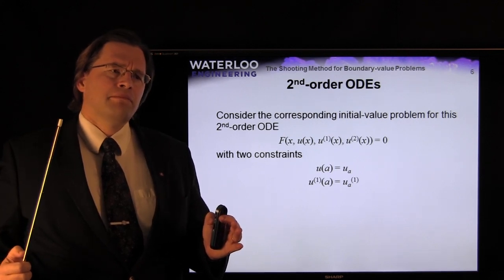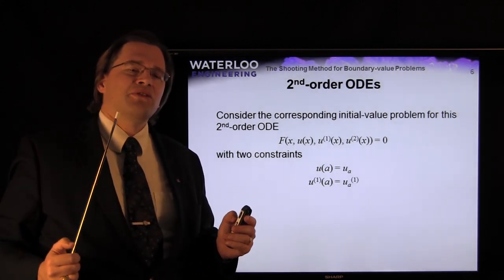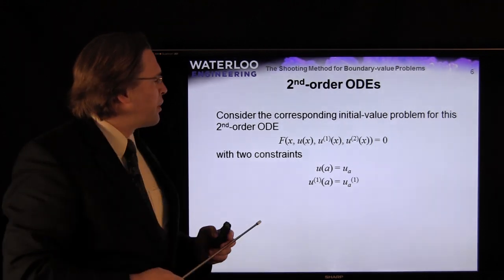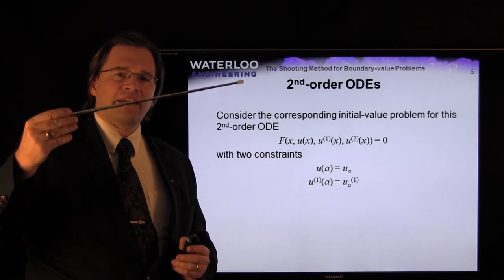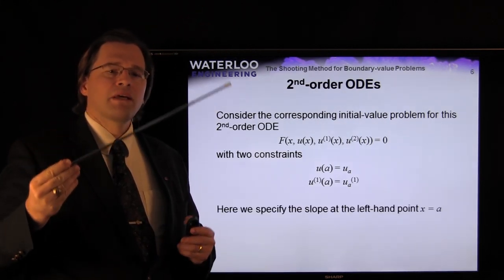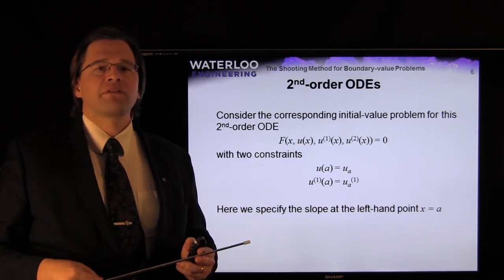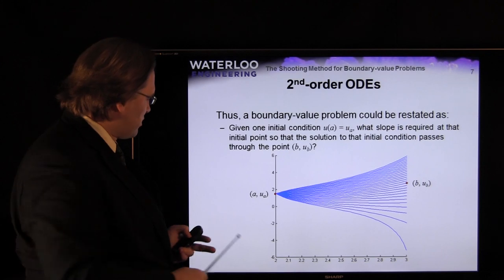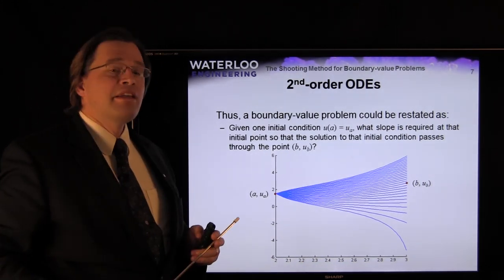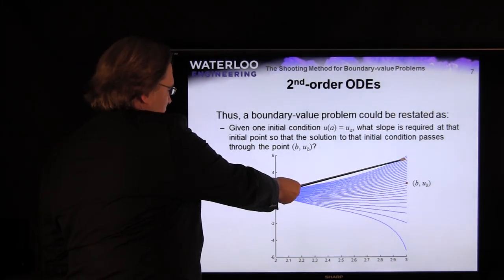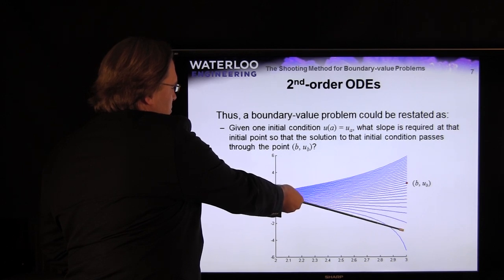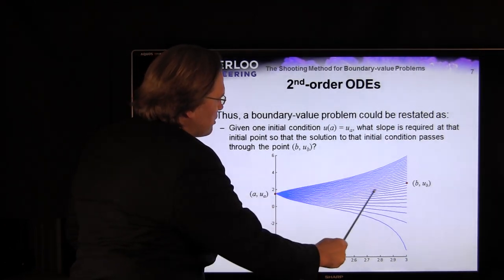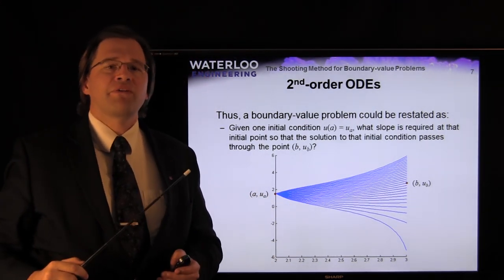Starting from a boundary value problem, we consider a corresponding initial value problem for that second-order ODE where both constraints are placed at the left-hand endpoint A. An initial value problem fixes both the initial value and the initial slope at that left endpoint. There are a number of solutions originating at that point, each with a different initial slope.